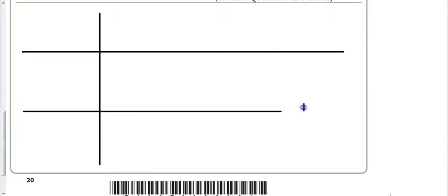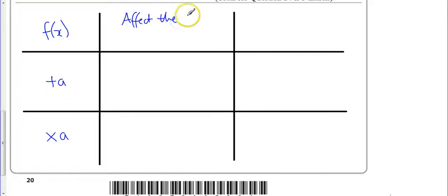Now there's a number of things that can happen. If we start with a function f(x), you can either add a or we can times by a, but we can do it in different ways.